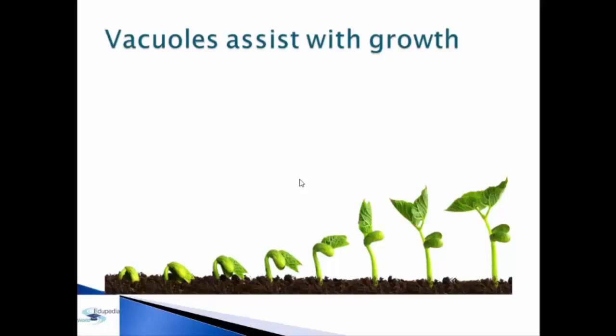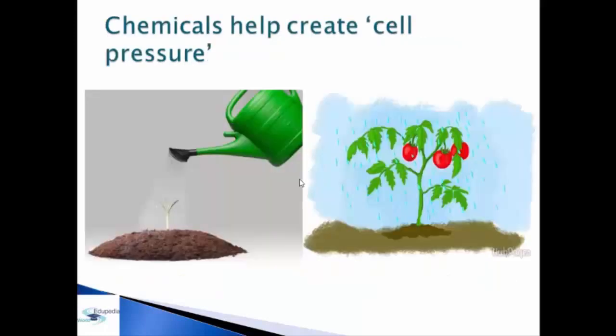Vacuoles assist with growth, as you can see in the picture. The relatively high hydrostatic pressure produced by vacuoles also assists in cell elongation, but only when the cell wall is made soft enough for extension to take place. Vacuoles also contain chemicals that help create cell pressure, forming a concentrated solution that produces hydrostatic pressure within the plant cells.